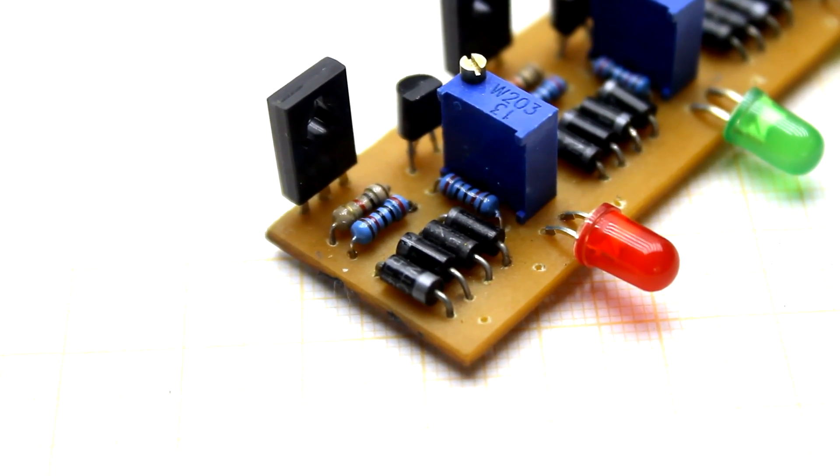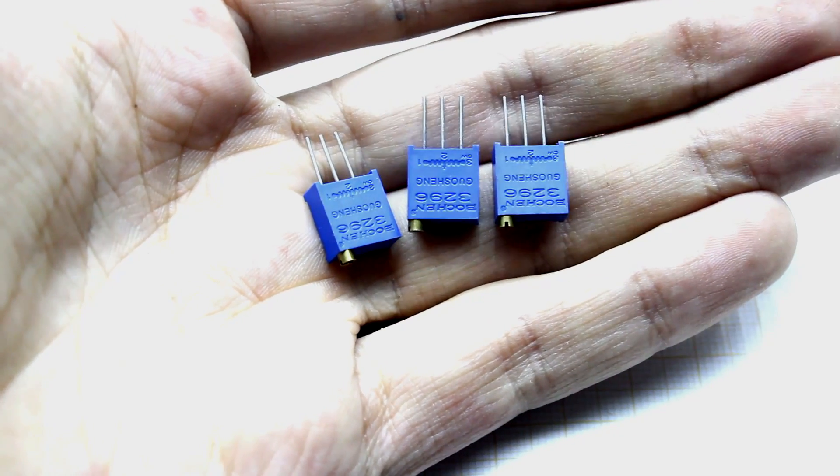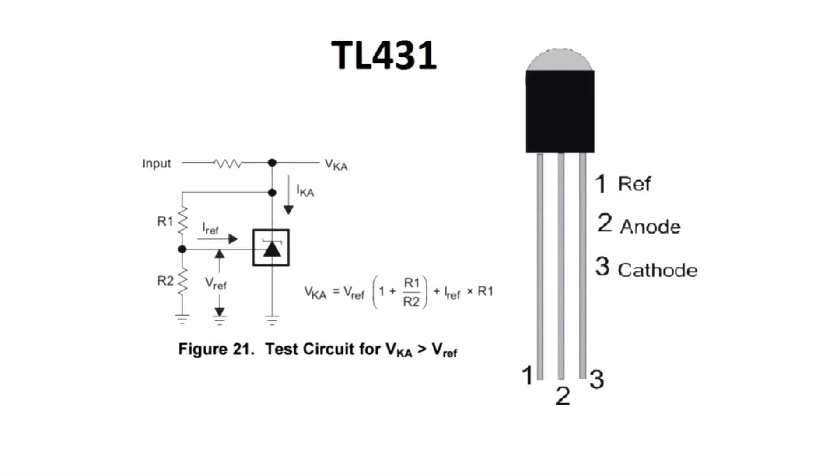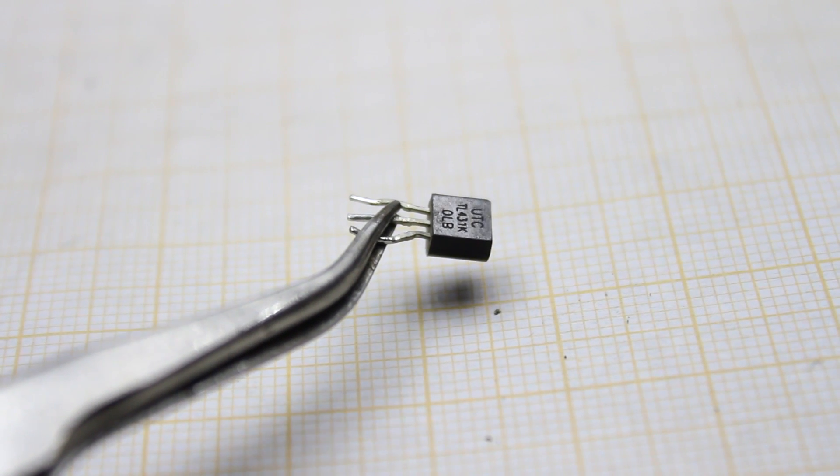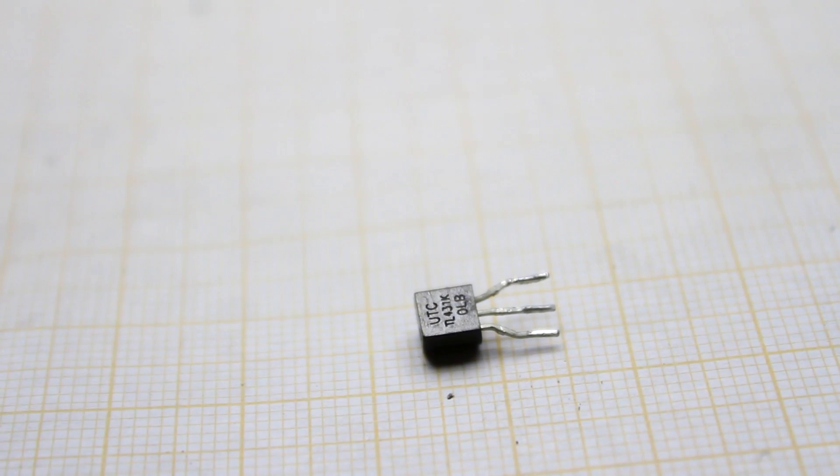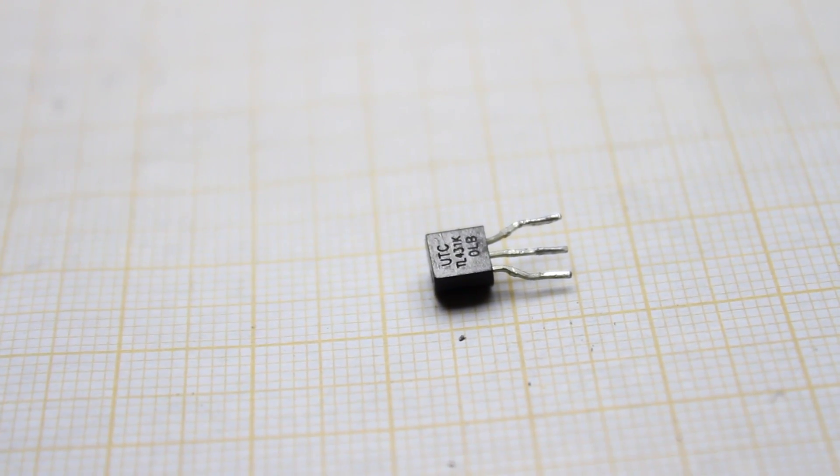For the most accurate setting, I advise you to use multi-turn trimmer resistors. Naturally, there are programs for calculating the chip of the TL431, but in my case, the resistors have a spread, so all the units require an individual adjustment. By the way, the microcircuit TL431 can be found on the boards of computer power supplies.